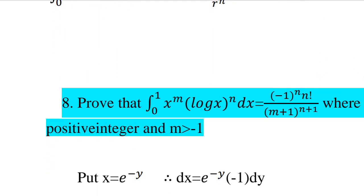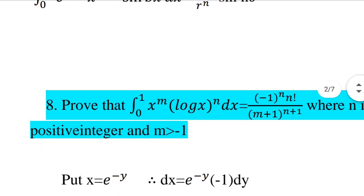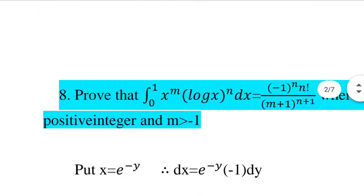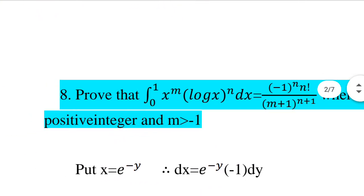Next question: Prove that the integral from 0 to 1 of x raised to m times log x the whole raised to n dx equals minus 1 the whole raised to n times n factorial divided by m plus 1 the whole raised to n plus 1, where n is a positive integer and m is greater than minus 1.